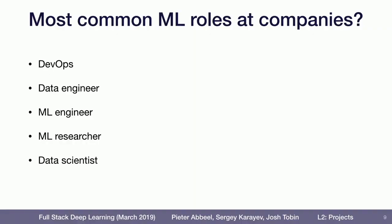First, I want to quickly go into what are some of the machine learning related roles that you might see at companies. A few of them are DevOps, data engineer, machine learning engineer, machine learning researcher, and data scientist. How can you make sense of all these different roles and what's the difference between them?